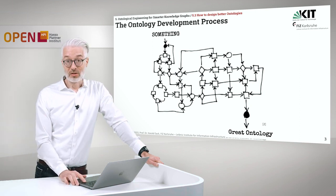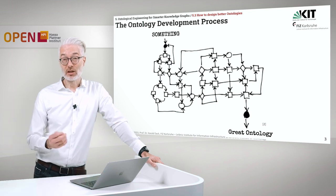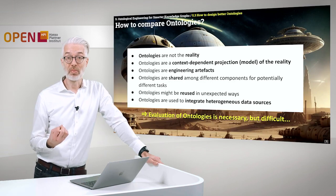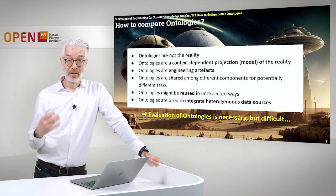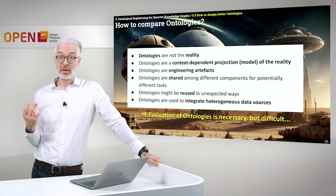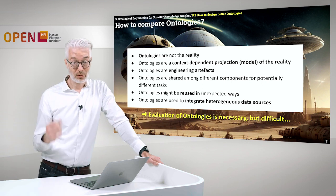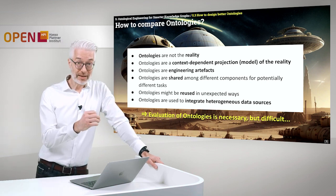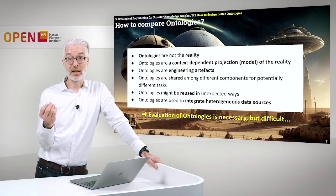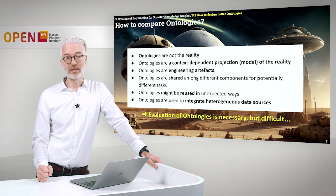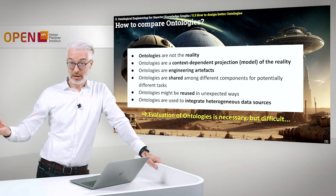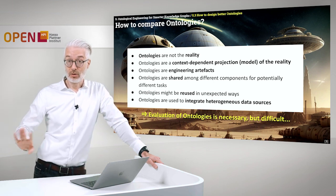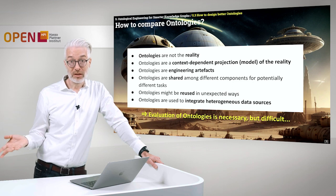The question of course is how do we judge the quality of an ontology and how do we compare these? First of all, what you have to keep in mind: ontologies are not the reality. Ontologies are a context-dependent projection — they are a model of the reality, in the sense that you leave out things and take away things from reality that you don't need, because that would simply be overhead.